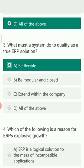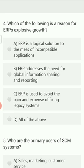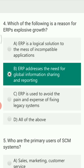The next MCQ is: which of the following is the reason for ERP's explosive growth? Option A is ERP is a logical solution to the mess of incompatible applications. Option B is ERP addresses the need for global information sharing and reporting. Option C is ERP is used to avoid the pain and expense of fixing legacy systems. Option D is all of the above. The right answer is Option B — ERP addresses the need for global information sharing and reporting.